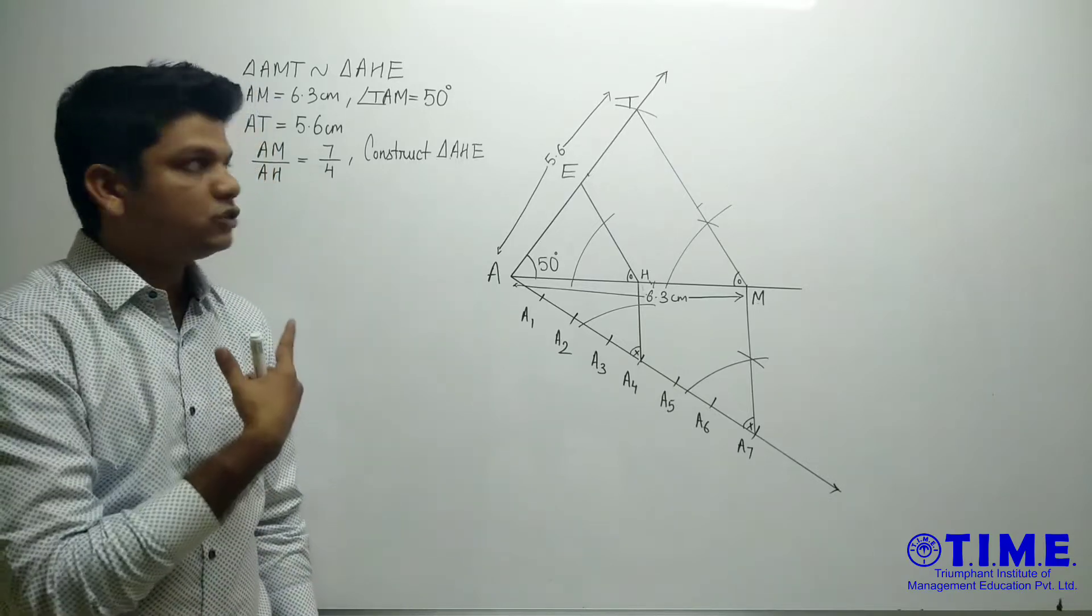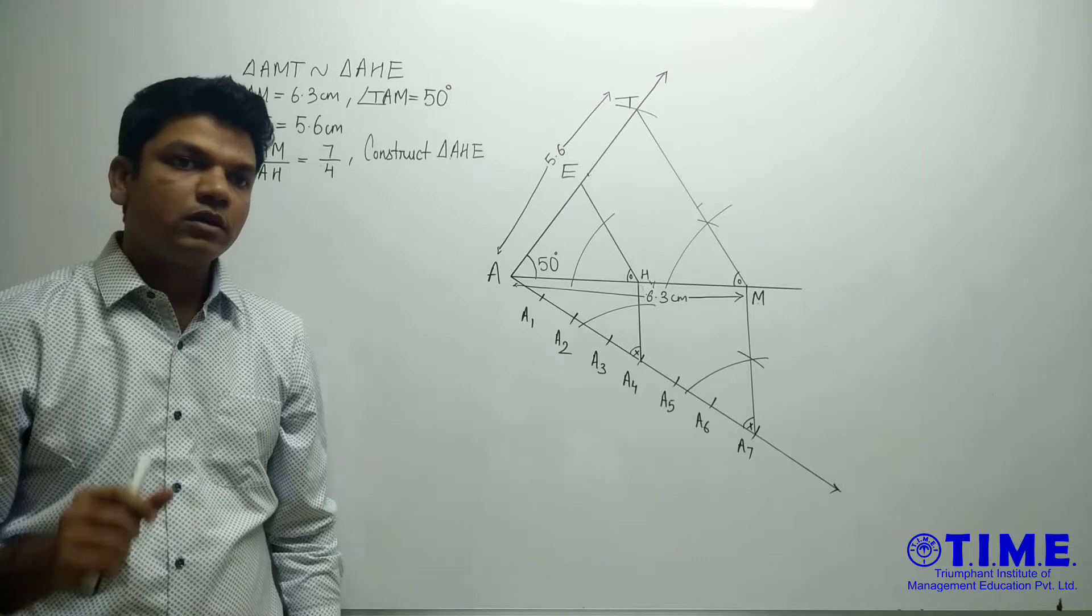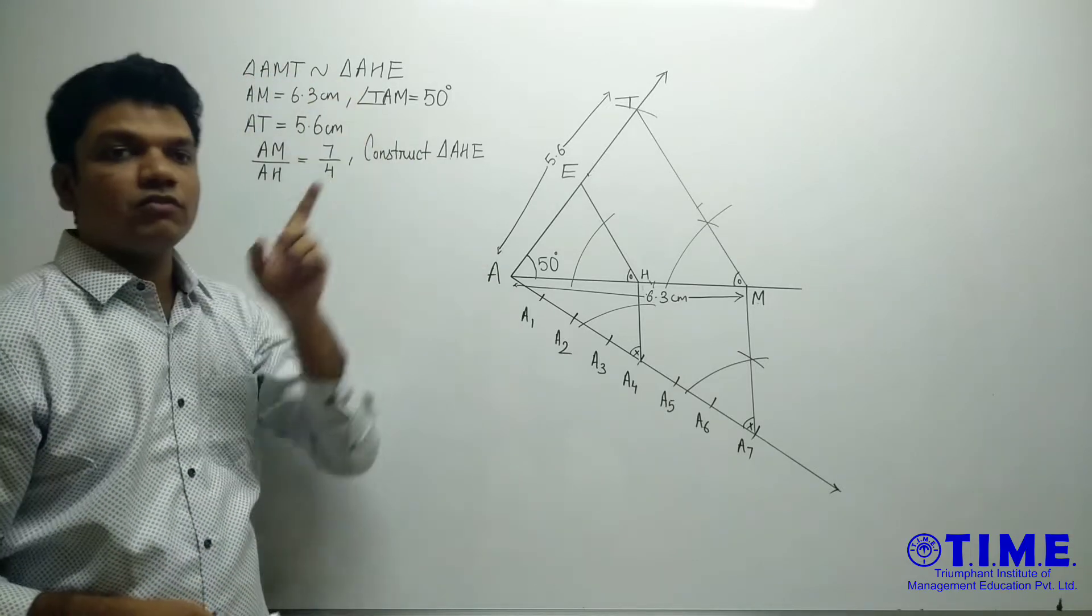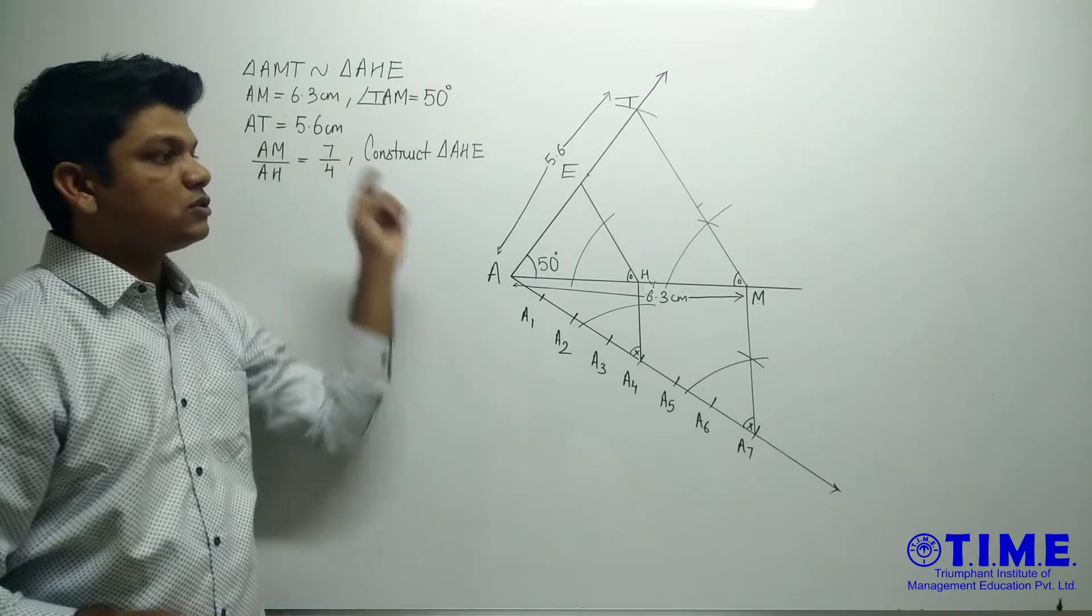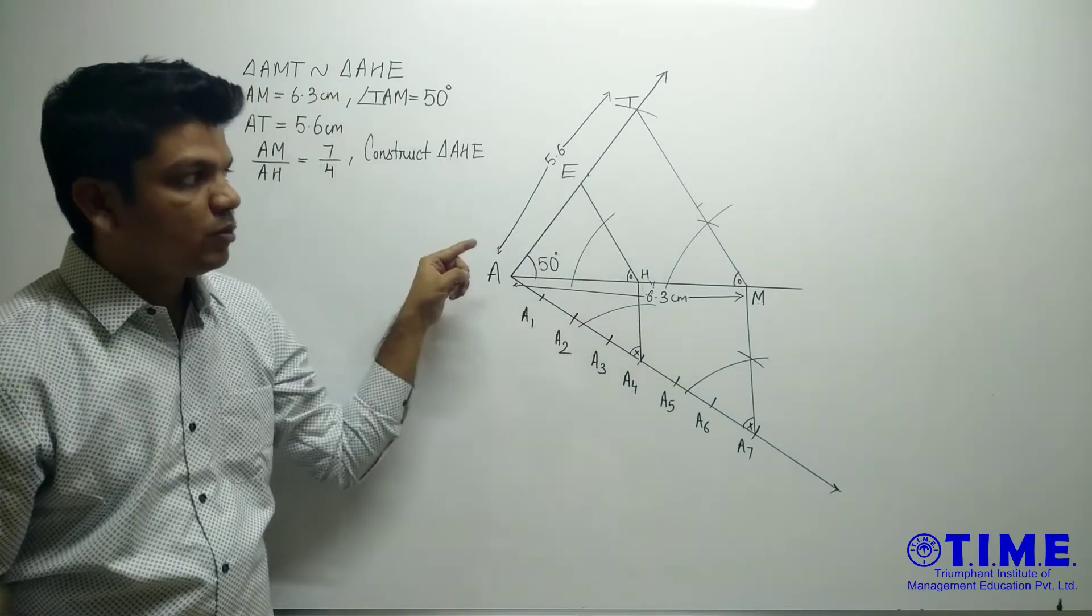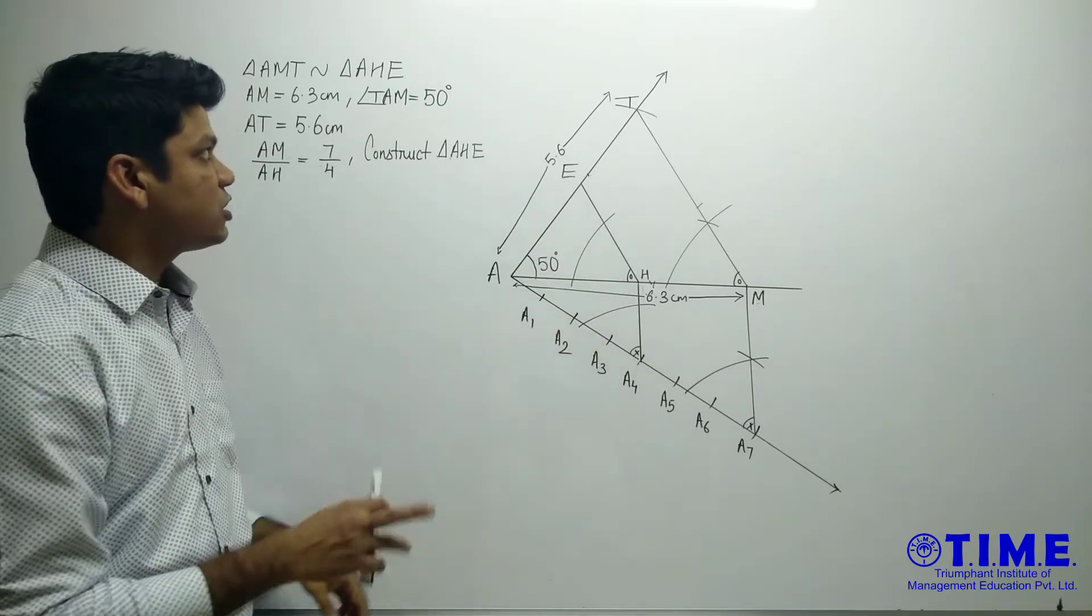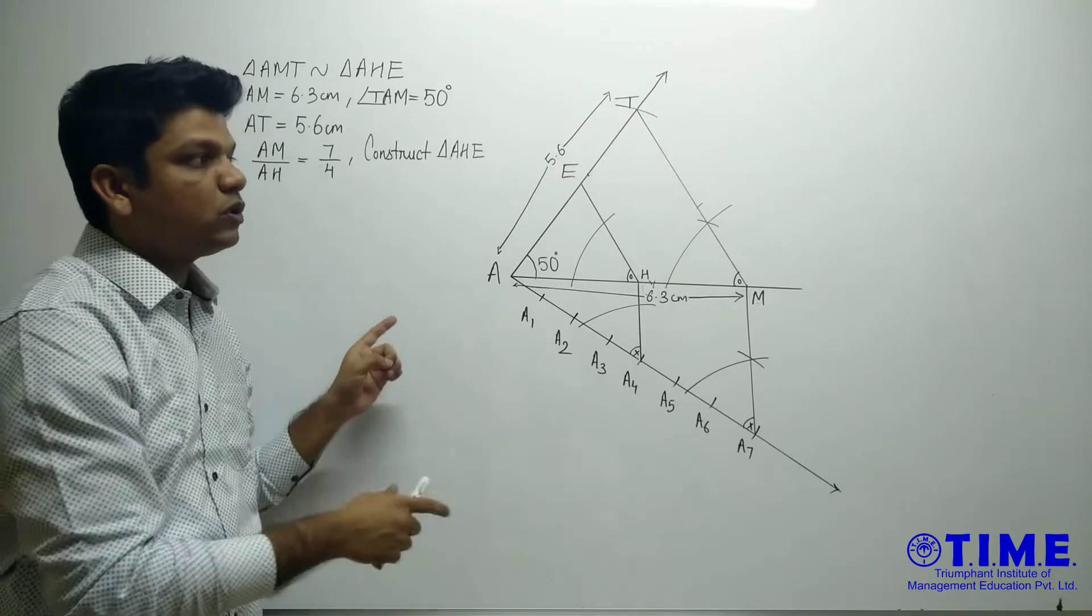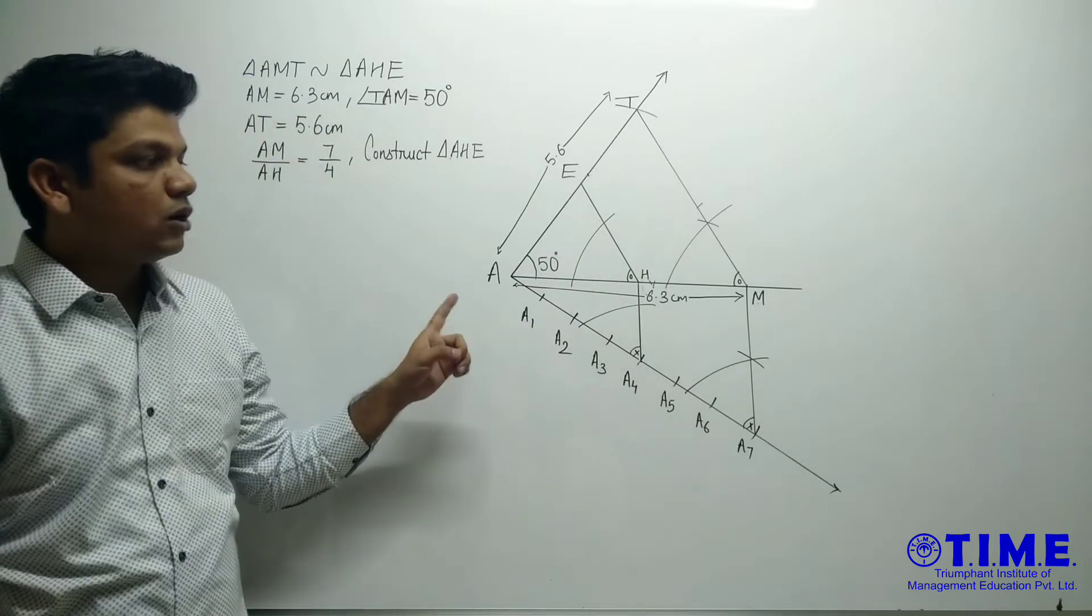Now next thing is construction. Now constructing a similar triangle. There are two types, with a common vertex and with uncommon vertex. With a common vertex, the triangle construction will be like this, one within other. In this type, we don't have to find their sides separately. We have to construct one triangle within the other.